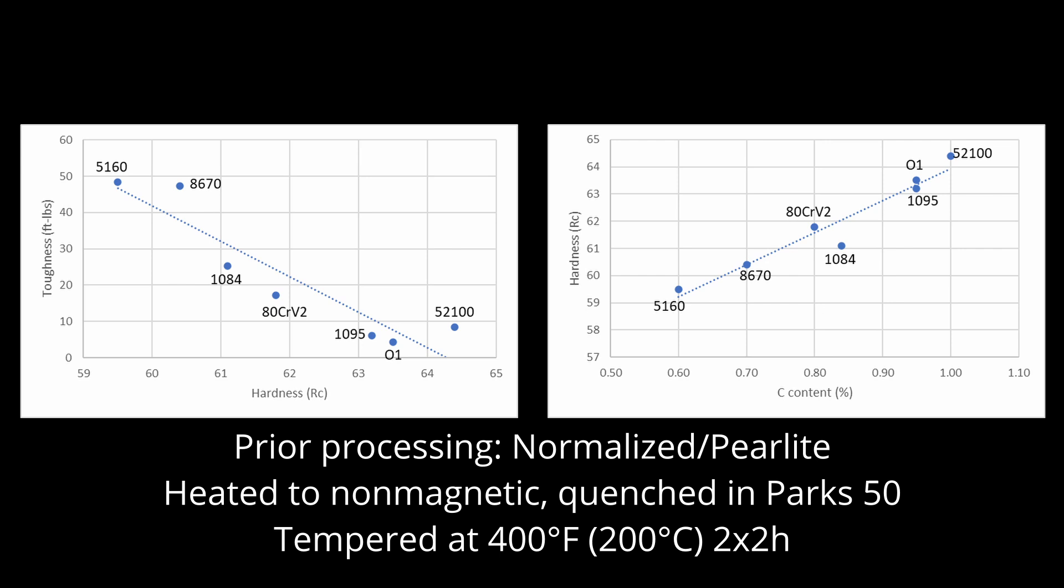So 8670 or 5160 would be chosen for choppers or other knives requiring high toughness, and a high carbon steel like 52100 would be better for fine cutting knives and kitchen knives. 1084 and 80CrV2 are better for general purpose knives.